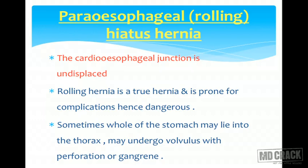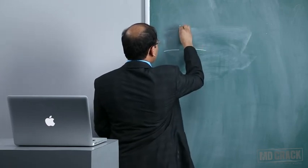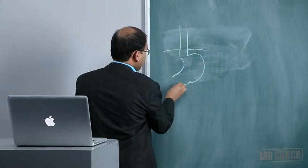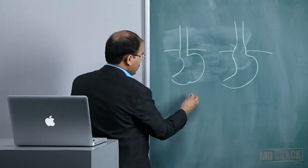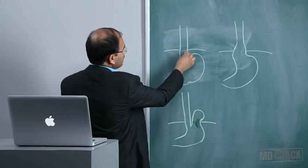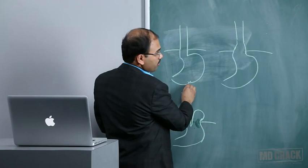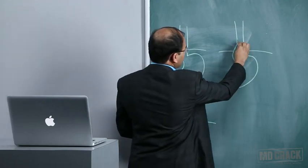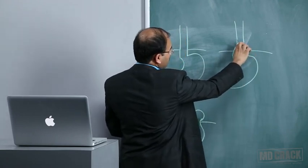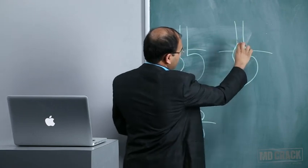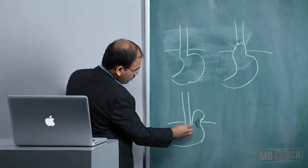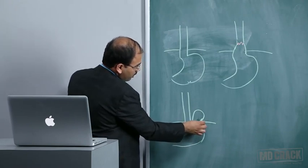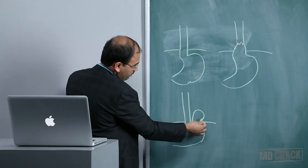Looking at the board: in normal anatomy the cardioesophageal junction is at its normal location below the diaphragm. In sliding hernia, the cardioesophageal junction migrates upwards and the upper part of the stomach and cardia herniate into the posterior mediastinum. In rolling hernia, the cardioesophageal junction does not get displaced from its normal location — only the fundus of the stomach herniates alongside the hiatus.